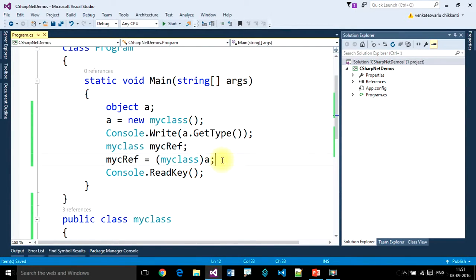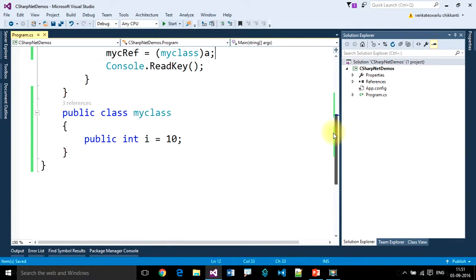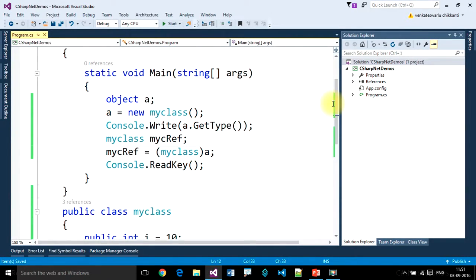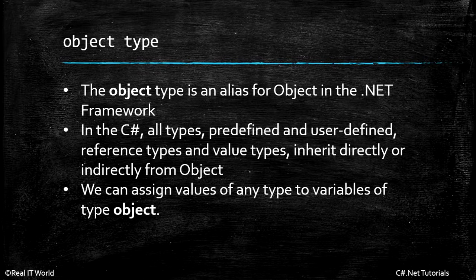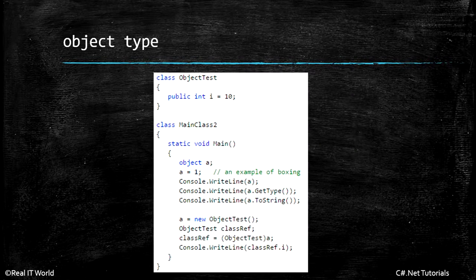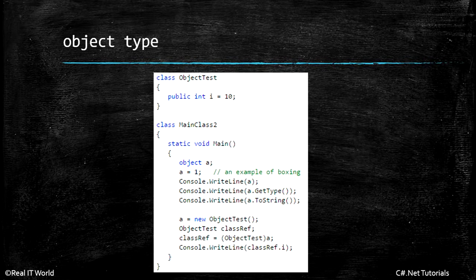This is a small example for storing user-defined types inside object. We can assign values of any type to variables of object type — object is a parent class of any type in C Sharp. We can store any type of values inside object type. Thank you for watching.